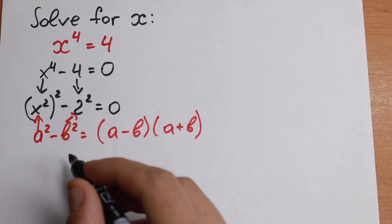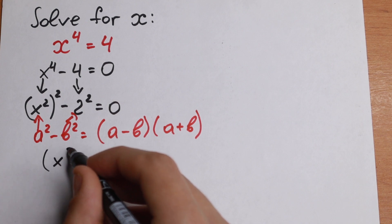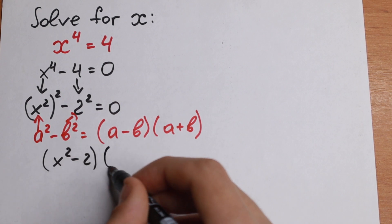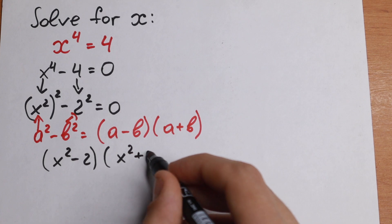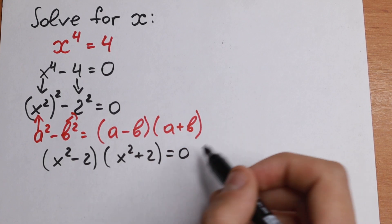As a result we can split it into an identity. We will have x squared minus 2 times x squared plus 2 equal to 0.